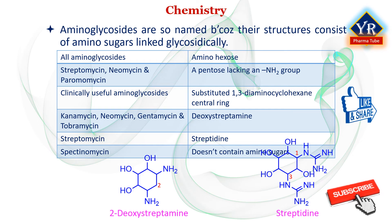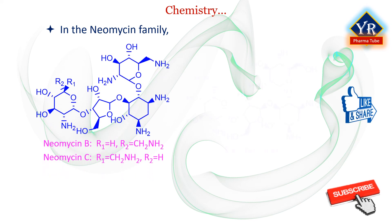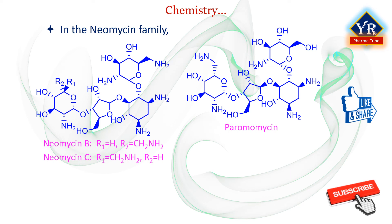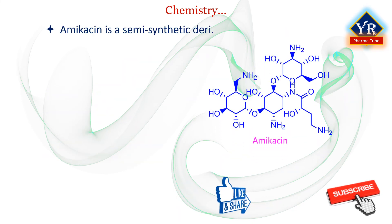A related compound, spectinomycin, is an aminocyclitol that does not contain amino sugars. The aminoglycoside families are distinguished by the amino sugars attached to the aminocyclitol unit. In the neomycin family — which includes neomycin B and paromomycins — three amino sugars are attached to the central 2-deoxystreptamine. The kanamycin and gentamicin families have only two such amino sugars. In the kanamycin family — which includes kanamycins A and B, amikacin, and tobramycin — two amino sugars are linked to a centrally located 2-deoxystreptamine moiety, one of which is a 3-aminohexose. Amikacin is a semi-synthetic derivative prepared from kanamycin A by acylation of one amino group of the 2-deoxystreptamine moiety with 2-hydroxy-4-aminobutyric acid.